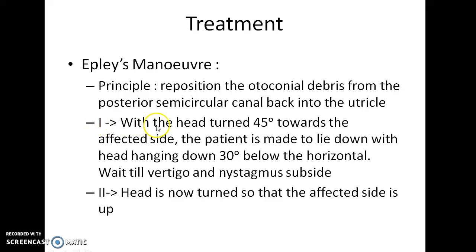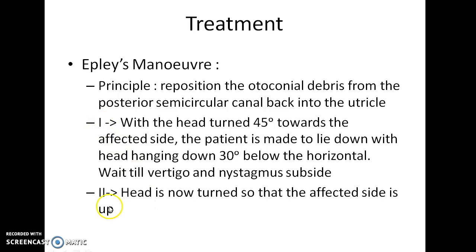Position 1: With the head turned 45 degrees towards the affected side, the patient is made to lie down with the head hanging 30 degrees below the horizontal. Wait until vertigo and nystagmus subside. This position is similar to the Dix-Hallpike maneuver.